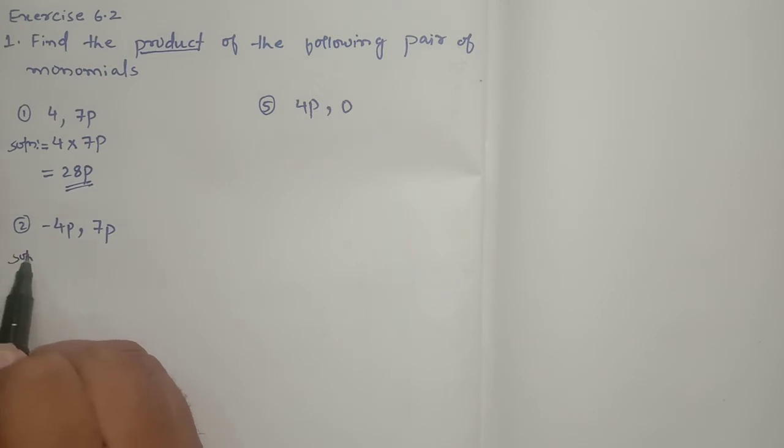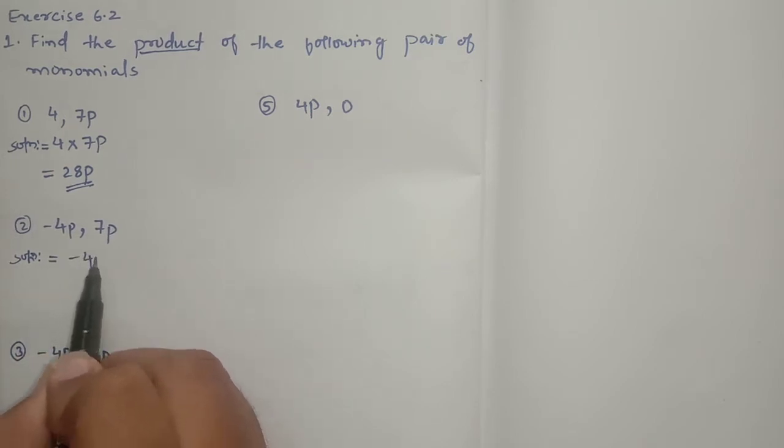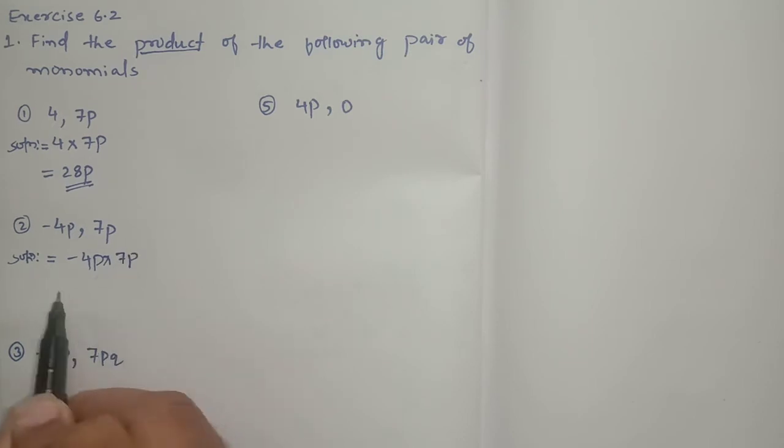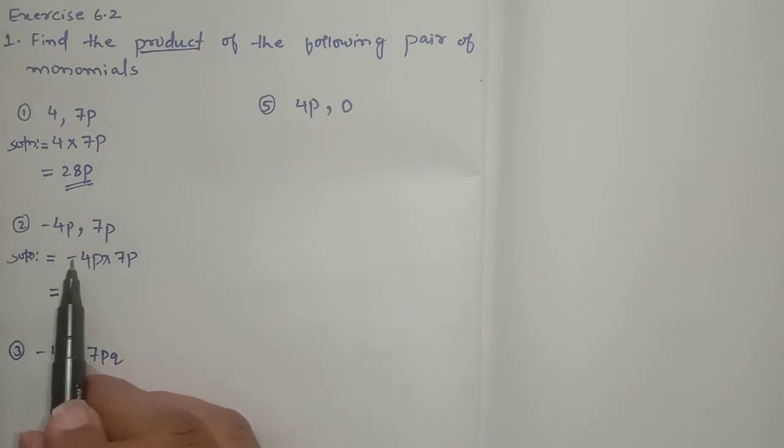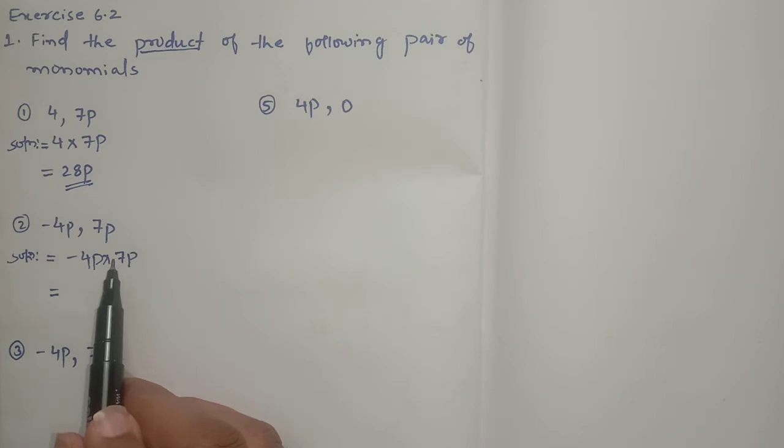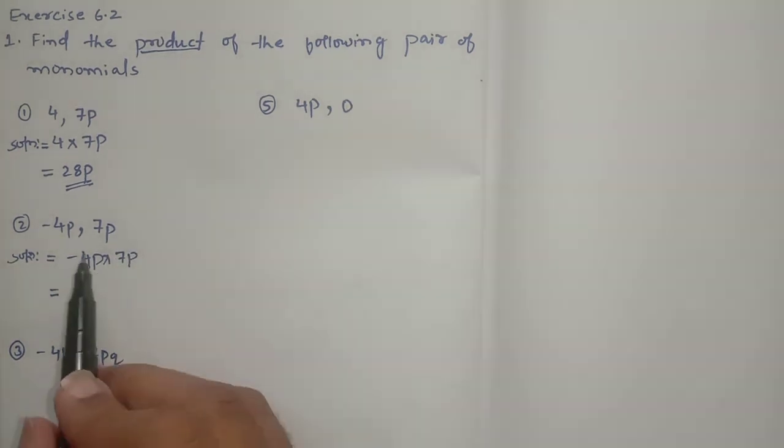Second question, solution: -4p into 7p. Here you see the signs are different. One sign is minus, another sign is plus. If it is like this, first we have to multiply the signs. Minus into plus is minus.